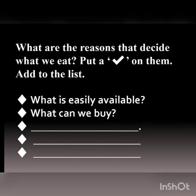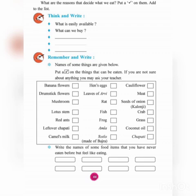Now let us move ahead to the next topic: What are the reasons that decide what we eat? Put a tick on them and add to the list. The first reason is what is easily available — we eat the food items which are easily available. The next reason is what we can buy — we eat the food items which are affordable. We will now look at the possible correct answers and add to the list.